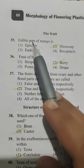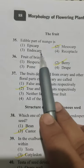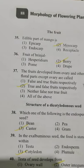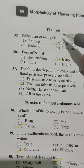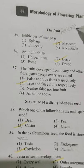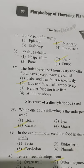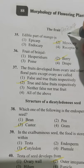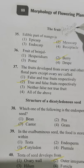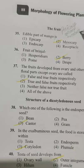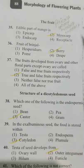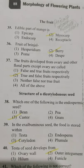Edible part of mango — Option 1 epicarp, Option 2 mesocarp, Option 3 endocarp, Option 4 receptacle. The wall of a fruit is the pericarp, differentiated into the outer epicarp, middle mesocarp, and inner endocarp. The edible part of mango is the middle wall — the mesocarp. Option 2.